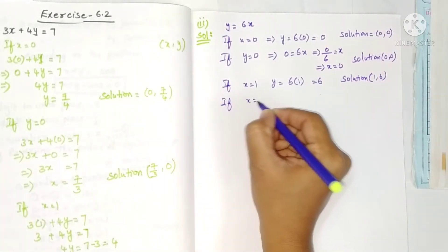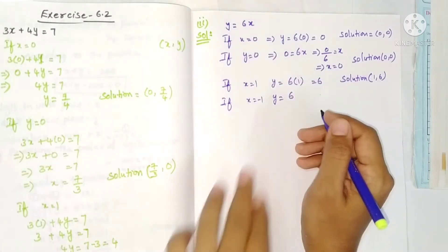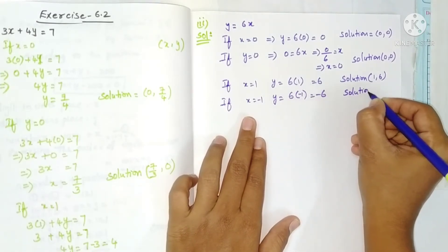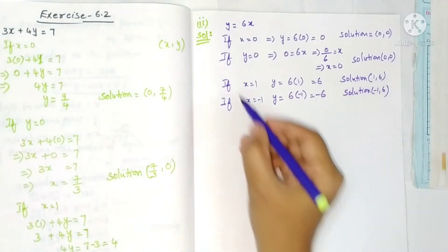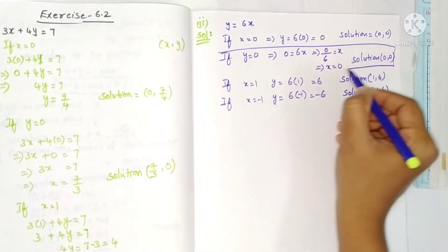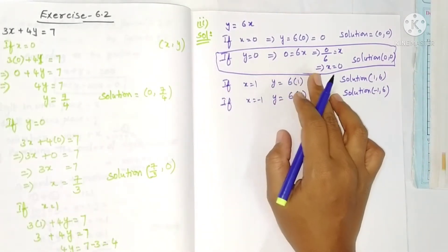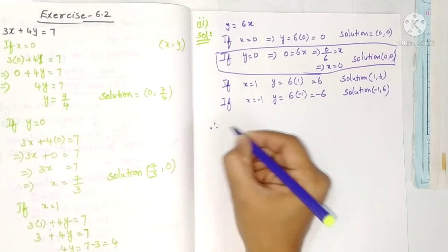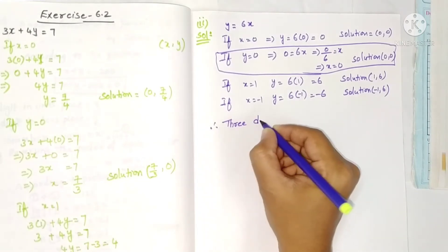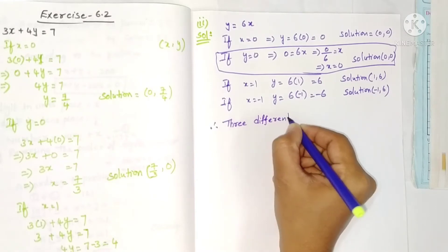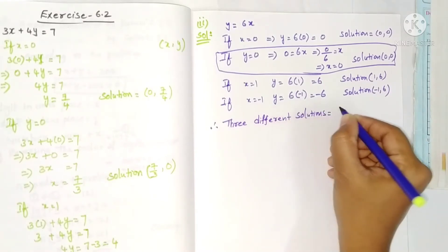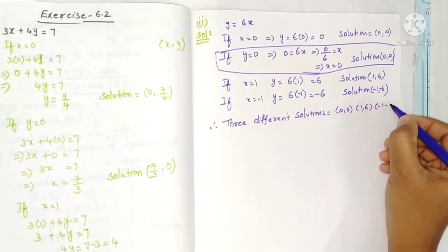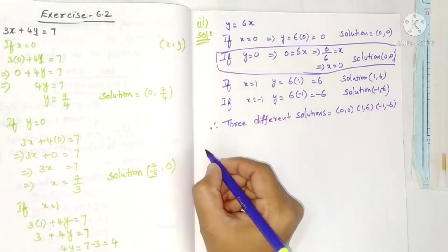For a third different solution, take x = minus 1: y = 6 into minus 1 = minus 6, solution is (-1, -6). Therefore, the three different solutions are: (0, 0), (1, 6), and (-1, -6).